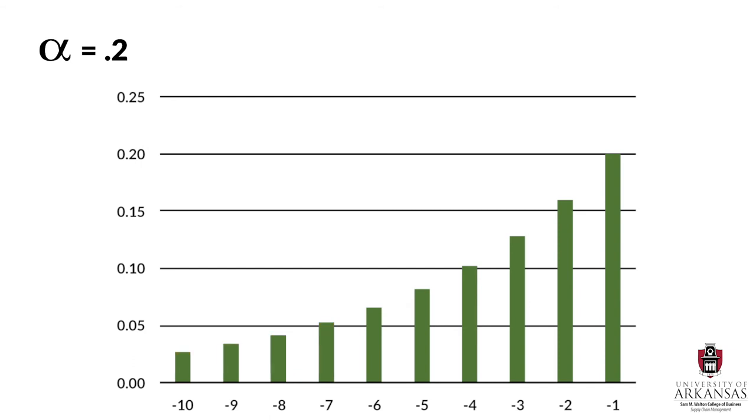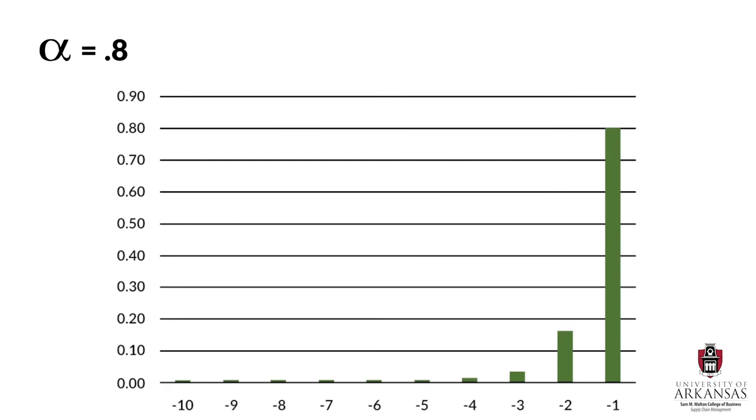Now let's also take a look at the example where alpha is equal to 0.8. In this case, we place greater emphasis on the most recent available demand observation, and we place very little emphasis on more distant demand observations.